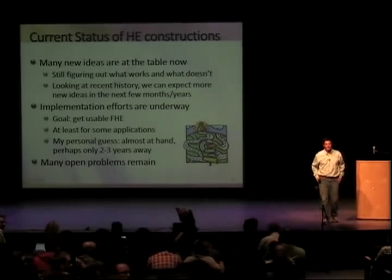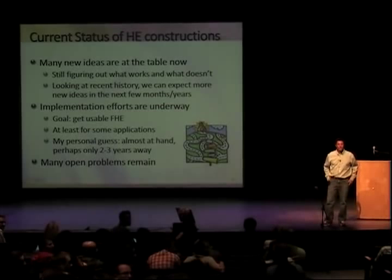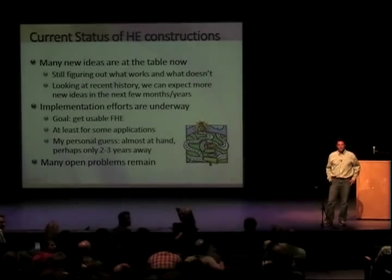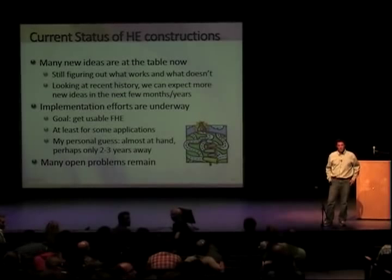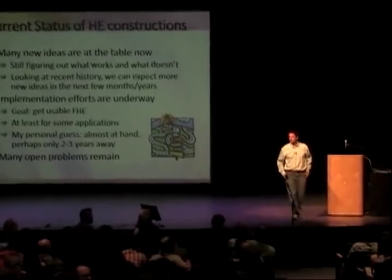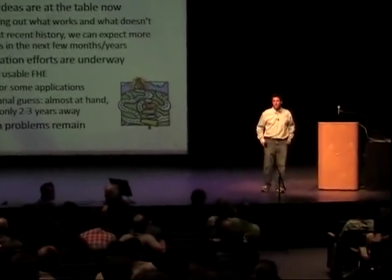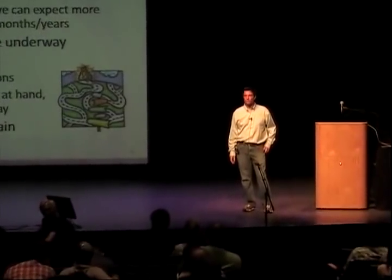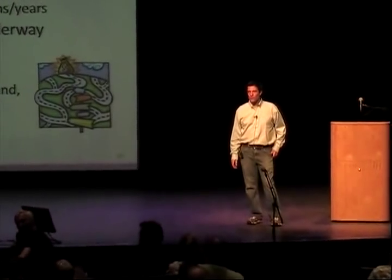When you say multiplication, you're talking about multiplying two one-bit numbers — is that correct? When you talk about multiplying the plaintext, this is multiplying two one-bit numbers. Yes. Thank you for your attention.